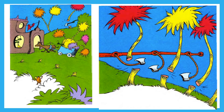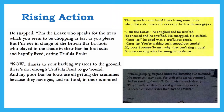The rising action continues as the Onceler continues to grow his business and cut down more Truffula trees, despite pleading from the Lorax to stop. He even creates a machine to cut down more trees and make speedier work of the job. As the rising action continues to build, the animals who were so happy among the Truffula trees and relied on nature for their homes are forced to leave, with the Lorax acting as their advocate and pleading with the Onceler to stop.